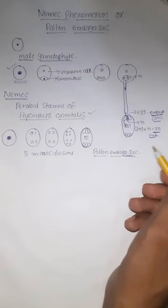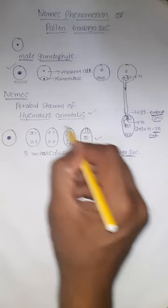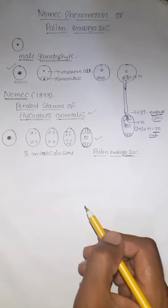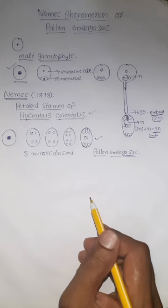Why it is called Nemec phenomenon? Means, it is first observed by a scientist called Nemec, in petaloid stamines of Hyacinthus orientalis plant. He observed in the year of 1898. This is all about Nemec phenomenon or pollen embryo sac. Both are same.